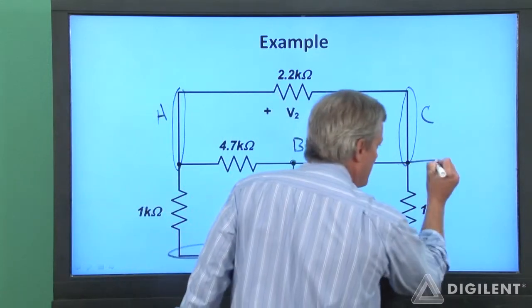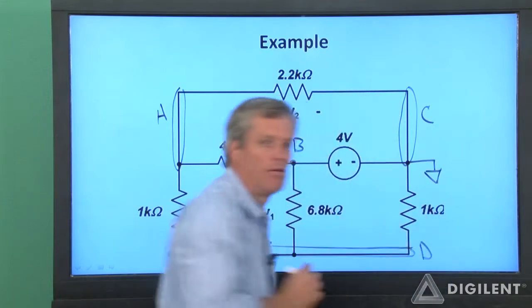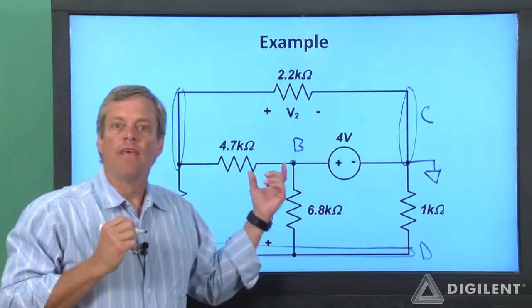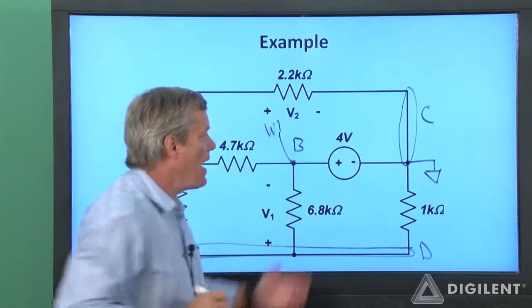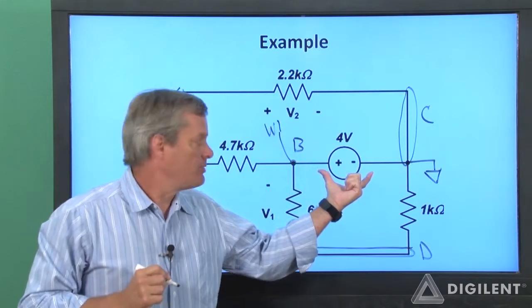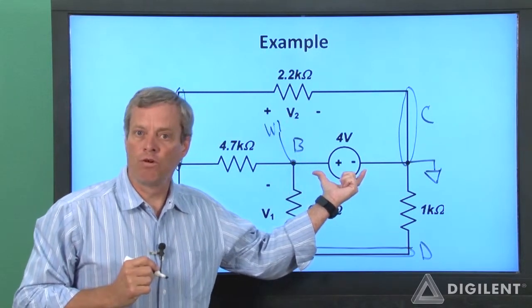The choice of source and where we apply the ground to our circuit are related. If I put ground here, then I can connect channel 1 to this node, and I'll set channel 1 waveform generator voltage to positive 4 volts.